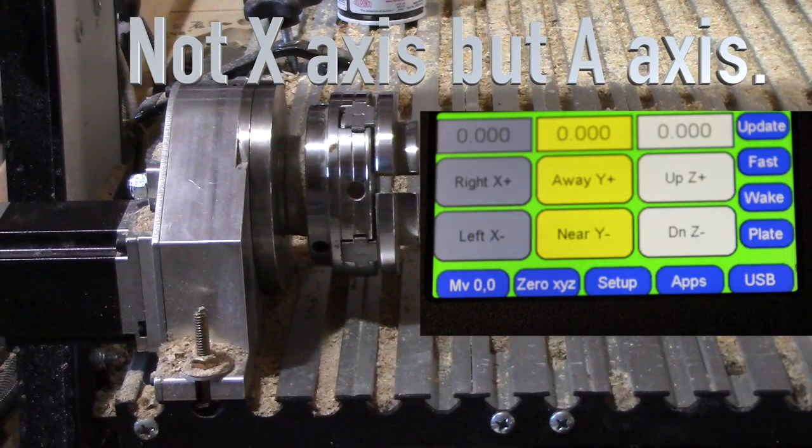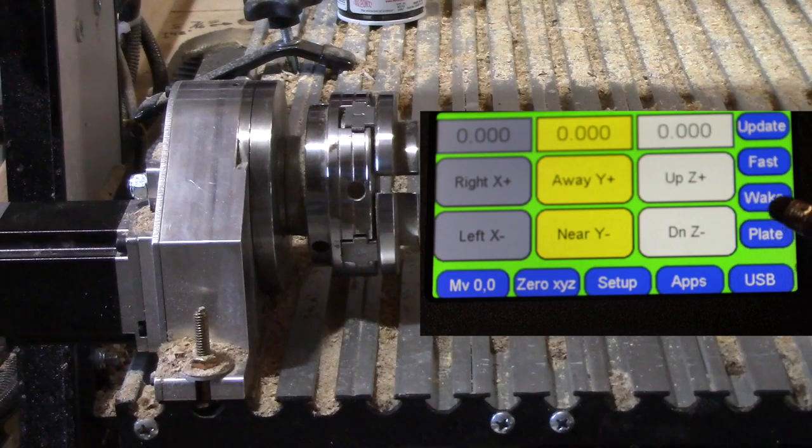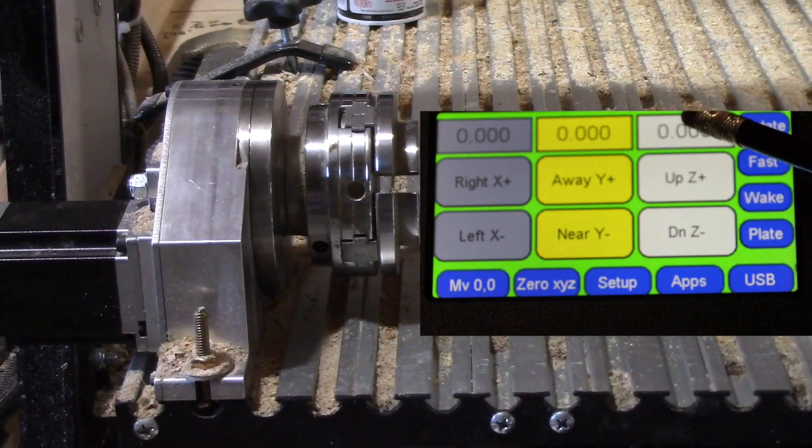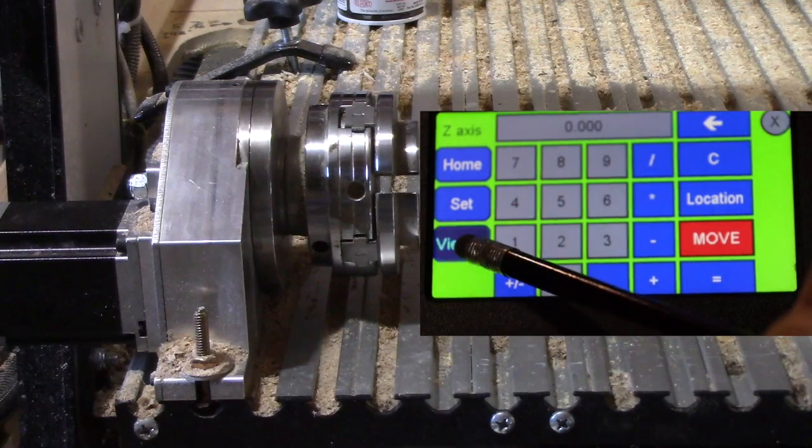If you look you have X, Y and Z axis control but I have a rotary axis I want to move so I press this button, the soft button, and I hit my view A.